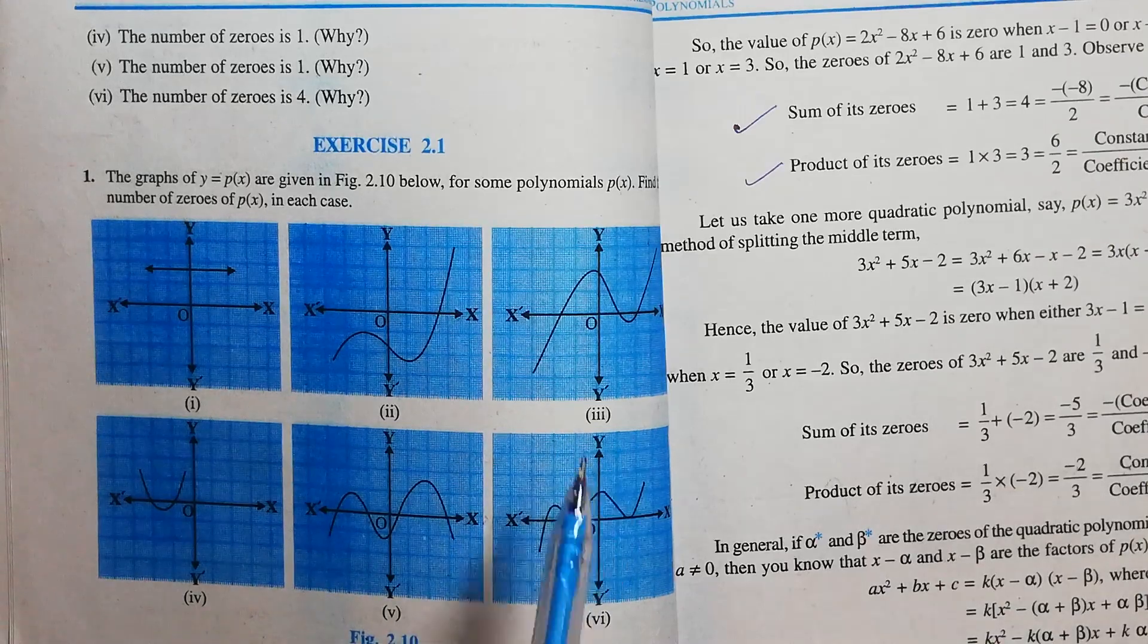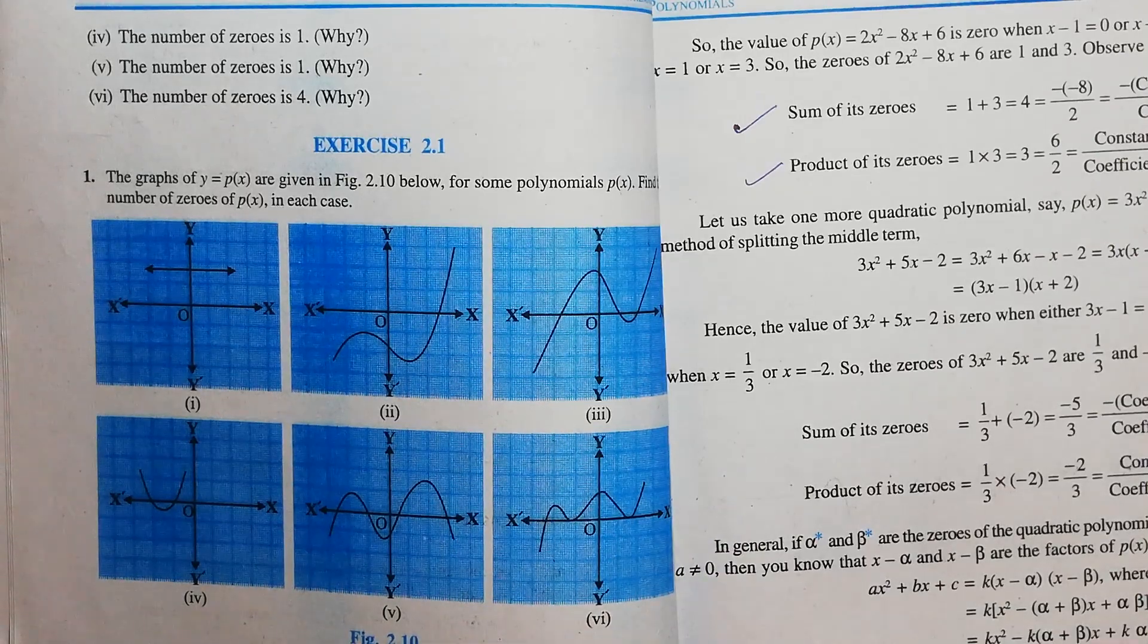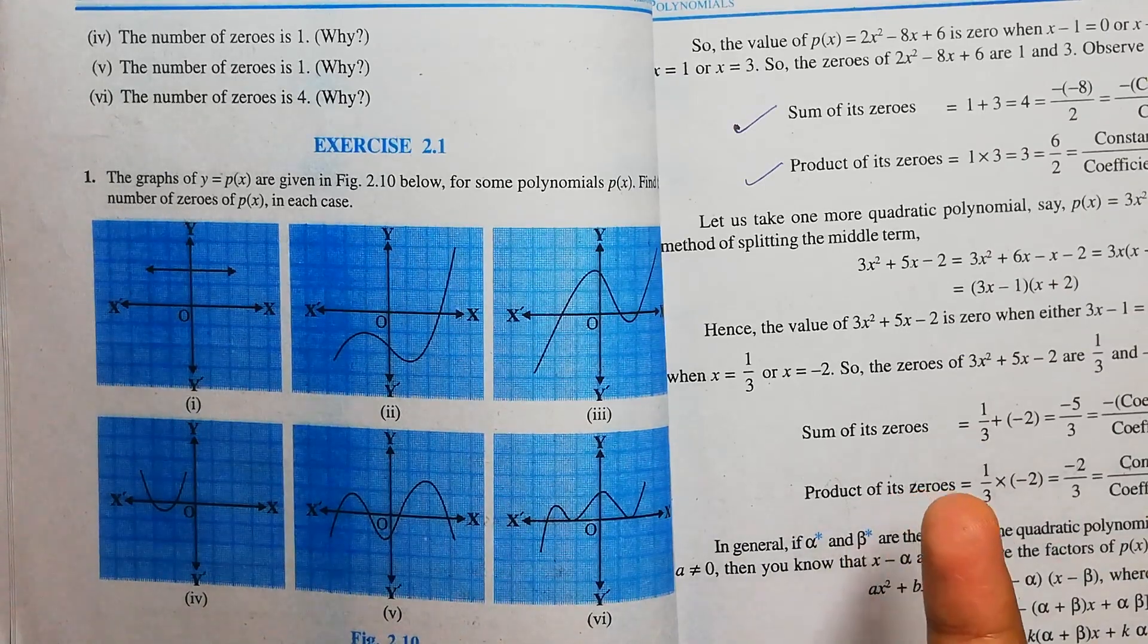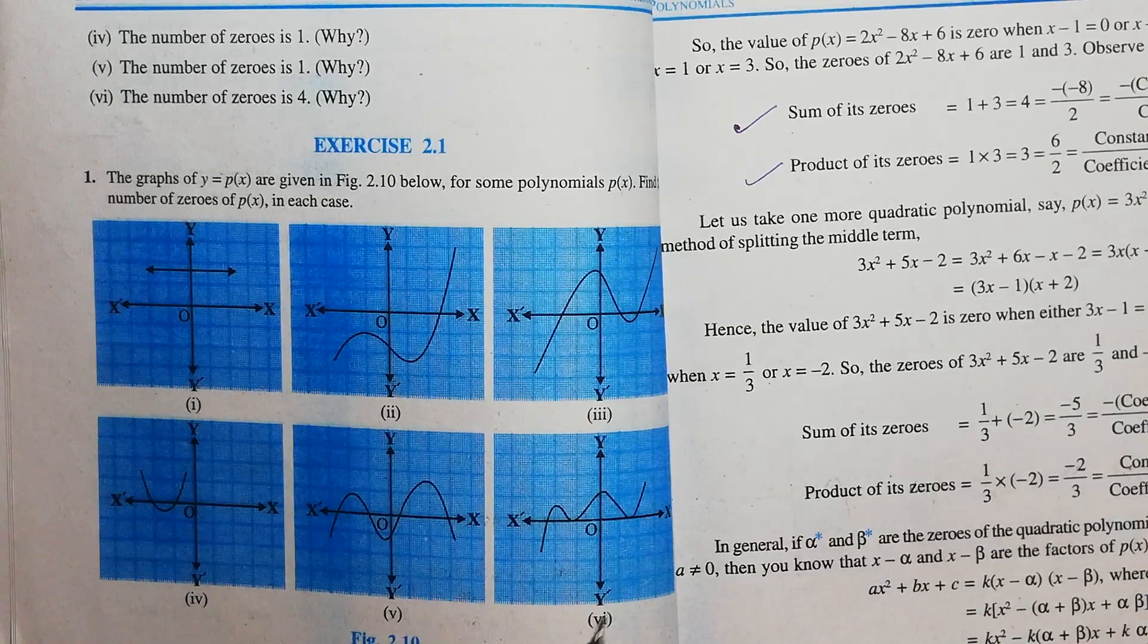If the graph intersects at most two points, it is called a quadratic polynomial. If the graph intersects at three points, it is called a cubic polynomial. Like this, we can name them also.